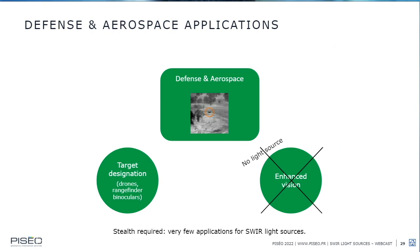In defense and aerospace markets, SWIR light sources are mainly used for target designation, taking advantage of SWIR's ability to provide good images regardless of weather. A notable difference is that for enhanced vision in military applications, no light source is used — because you don't want to be detected by the enemy, and not all forces are yet equipped with SWIR.